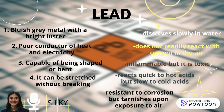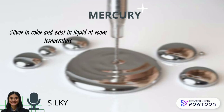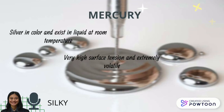The last one will be mercury, which is silver in color and exists as a liquid at room temperature. It has a very high surface tension, is extremely volatile, and is also a good conductor of electricity.